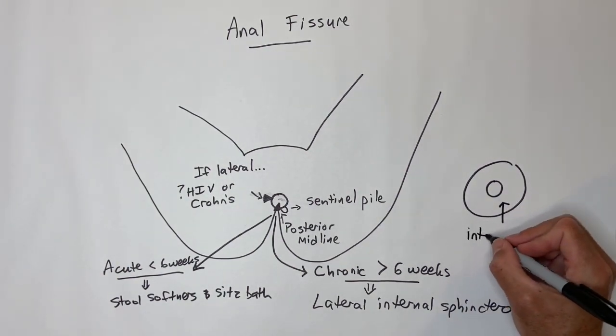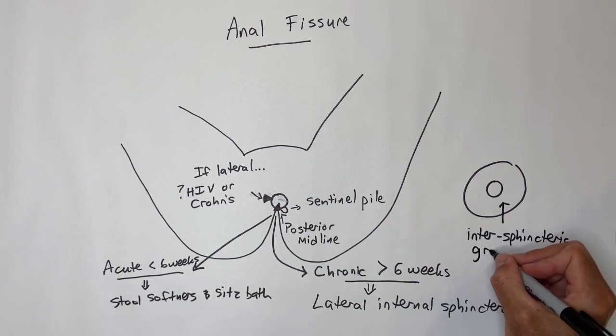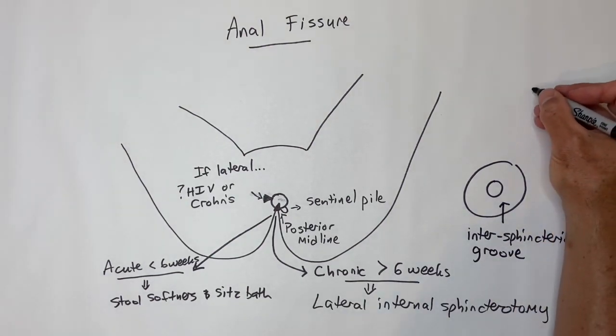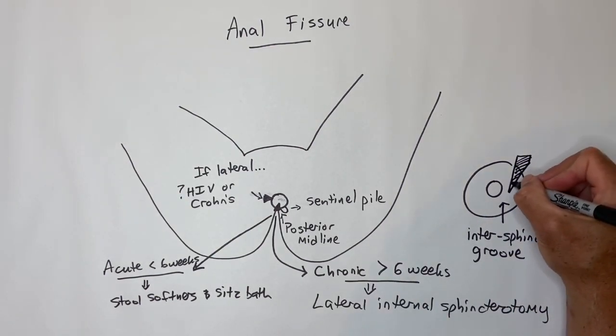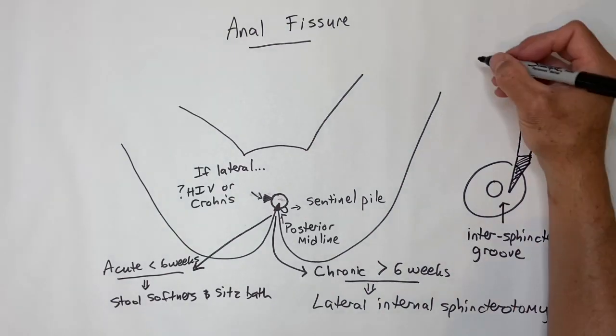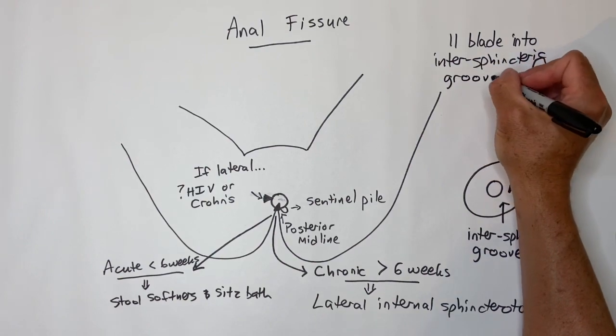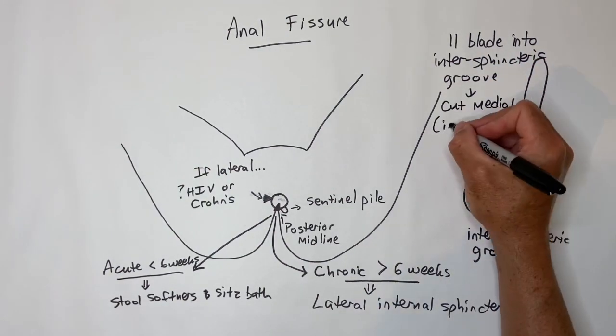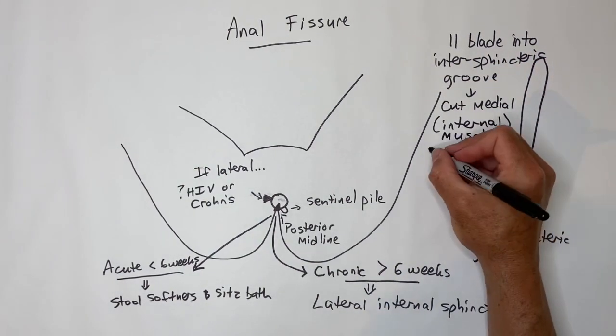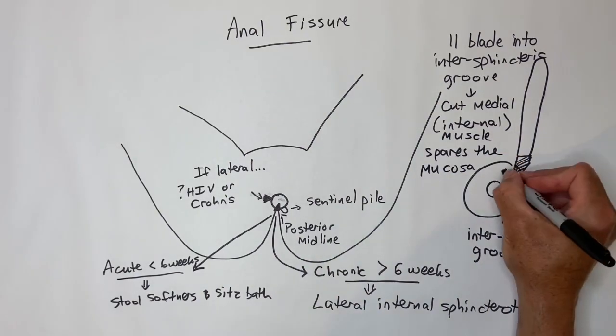Some talk about how Botox injection works, but the classic surgery is the lateral internal sphincterotomy. This is done by palpating the intersphincteric groove laterally. You place an 11 blade between the internal and external sphincter muscles, then you turn the blade medially to cut the internal anal sphincter and spare the mucosa.